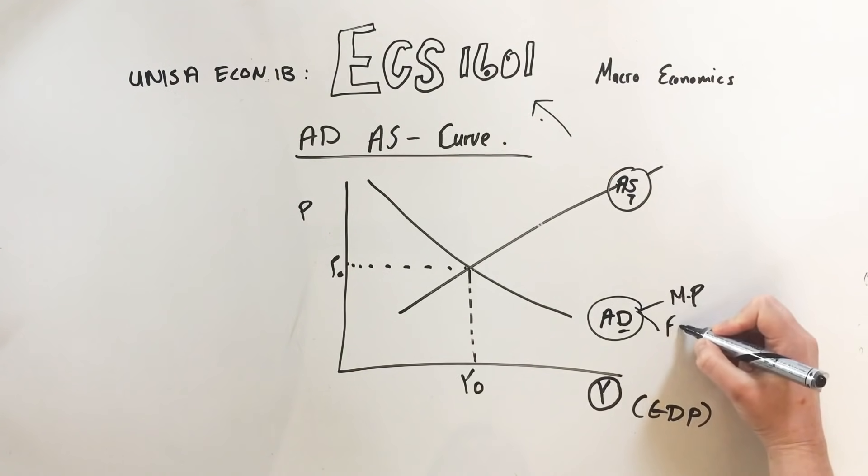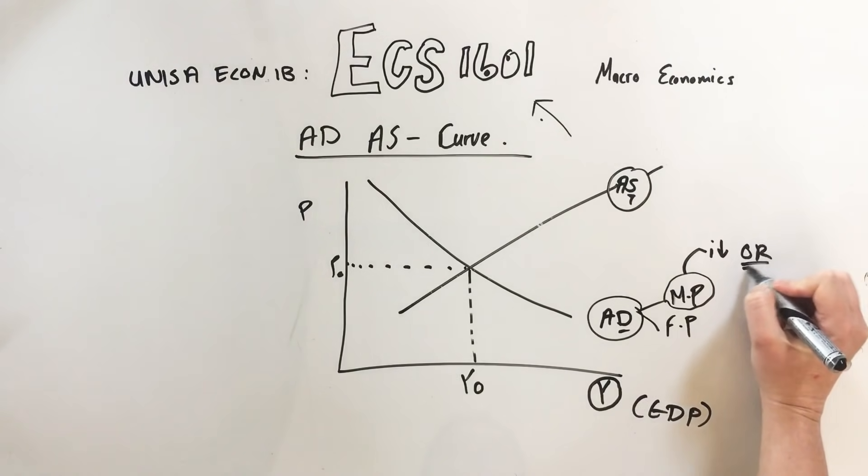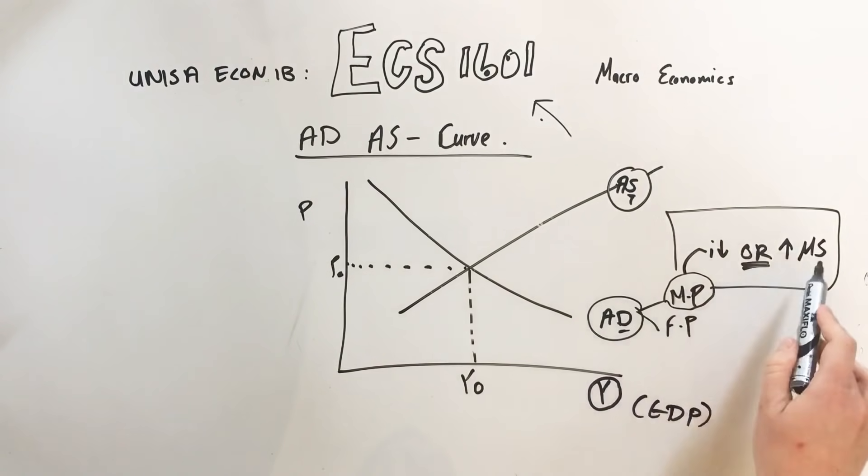The monetary policy is the South African Reserve Bank. The only thing they can do is they can lower inflation or they can increase the money supply. That is all they can do. Well, it does make a very big difference, but that's the two options. On the fiscal policy side, they can increase government spending or reduce taxes.